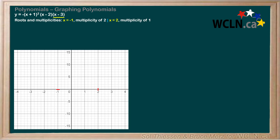Finally, the factor x minus 3 gives the root 3 and also appears once, so this root has a multiplicity of 1 as well, meaning the graph will cross through the axis at x equals 3. We'll draw a vertical tick at x equals 3 to help us remember. Next, let's determine the y-intercept by substituting 0 in for all the x's. This leaves us with negative times 1 squared times negative 2 times negative 3, which equals negative 6. I'll put a dot on the y-axis at y equals negative 6.